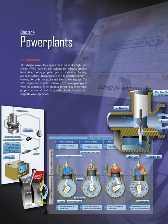Chapter 4 Power Plant Introduction. This chapter covers the engines found on most weight-shift-controlled WSC aircraft and includes the exhaust, ignition, lubrication, cooling, propeller, gearbox, induction, charging, and fuel systems.